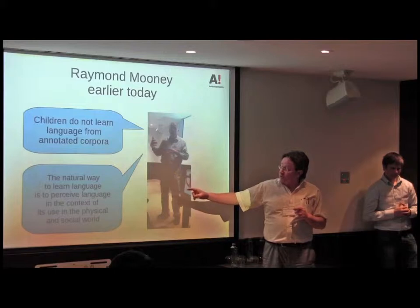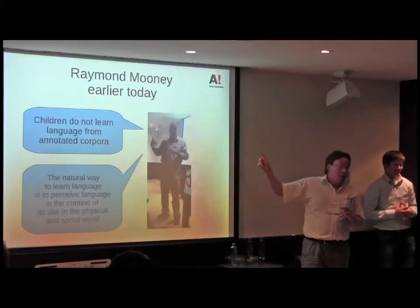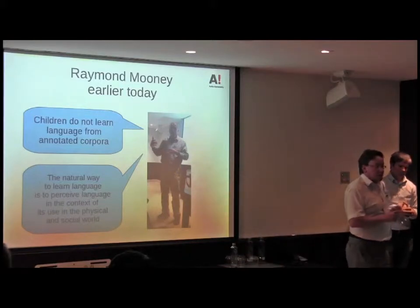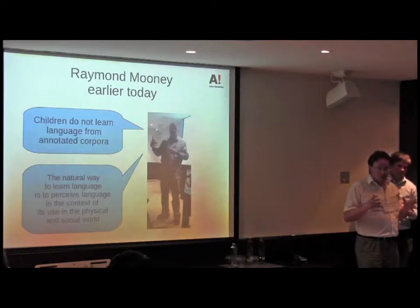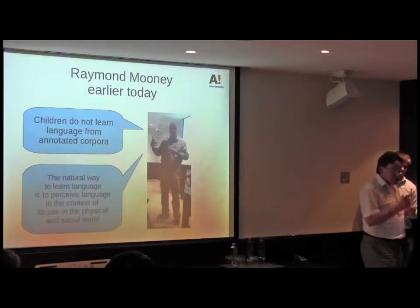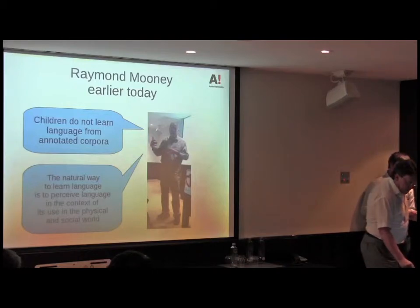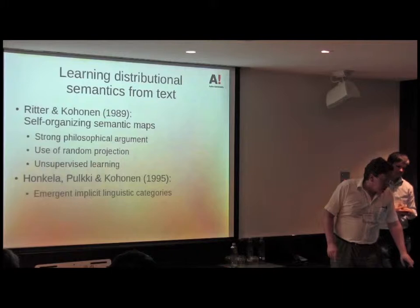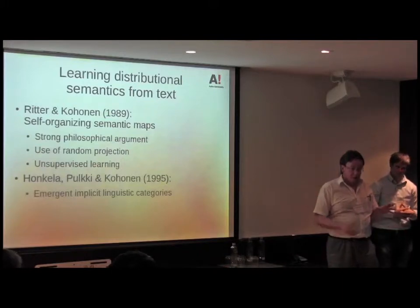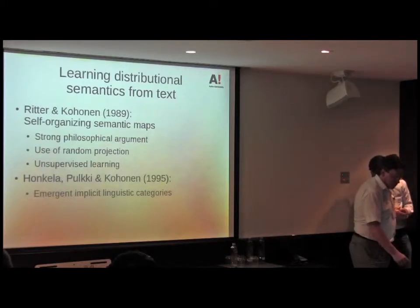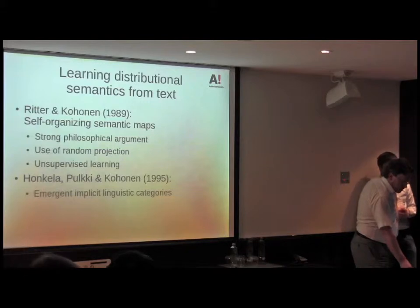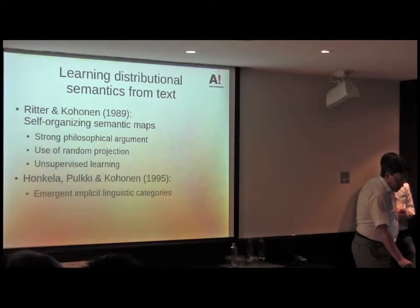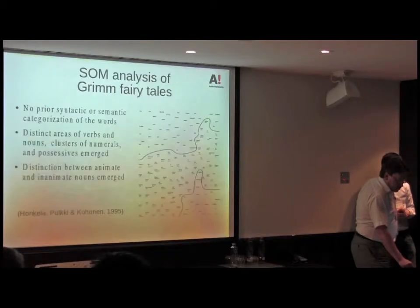We need to have language in context — physical and social world — and we don't have annotated corpora. We don't have labels like noun phrase and verb phrase; they have to emerge from the data. And in that sense, the experience I have, even with very shallow data — just the word context — shows we learn a lot of things. That's why I don't really accept the poverty of stimulus argument in the Chomskyan school.